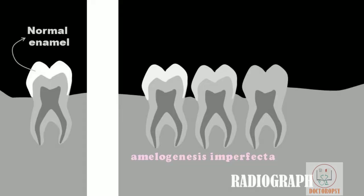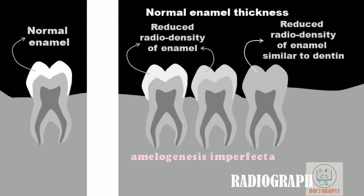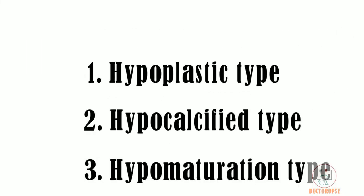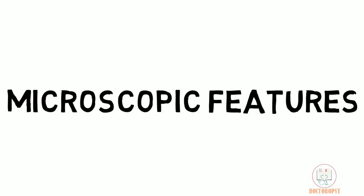In hypocalcified type, the enamel matrix is not defective, so the crown shape is not altered and there is normal enamel thickness. The problem is in the calcification, which makes the radio density of the enamel reduced — it may appear similar to the underlying dentine. In hypomaturation type, the radiographic features are similar to hypocalcified type: enamel thickness is normal but the radio density is reduced.